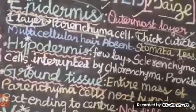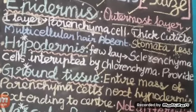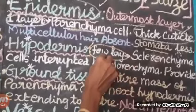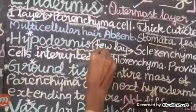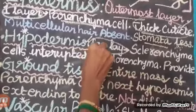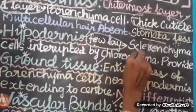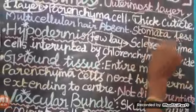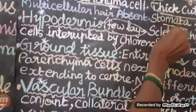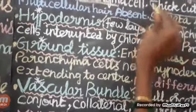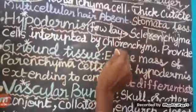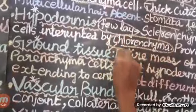The second one is hypodermis. Hypodermis is composed of few layers. Few layers which means some layers are sclerenchyma, which means strong cells. These are interrupted by chlorenchyma cells.